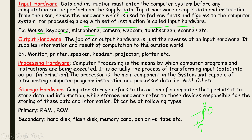Output hardware is the reverse of input hardware — it supplies information and the result of computation to the outside world. Examples of output hardware include: monitor, printer, speaker, headset, projector, and plotter. Output can be soft copy output (monitor) or hard copy output (printer).